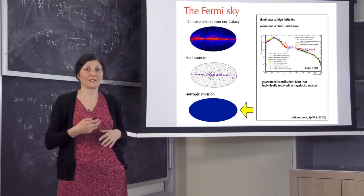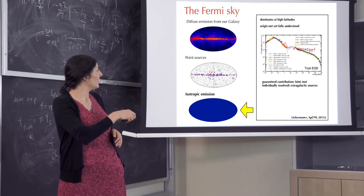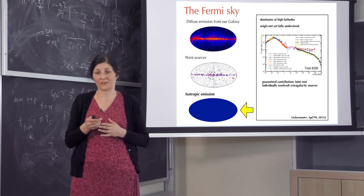The third thing is isotropic emission. Basically from outside of the galaxy, photons are coming to us from extragalactic objects, making this background isotropic emission that one can also study and learn a lot about astrophysics and dark matter as well.